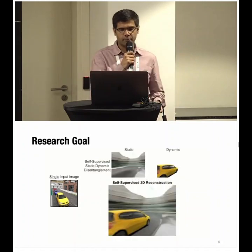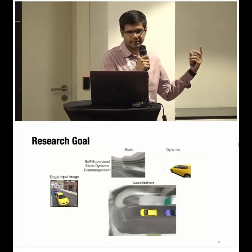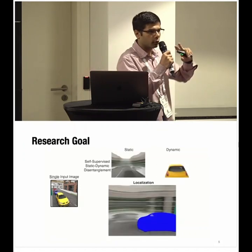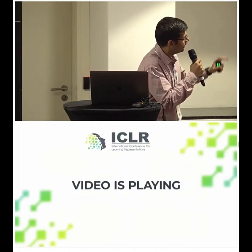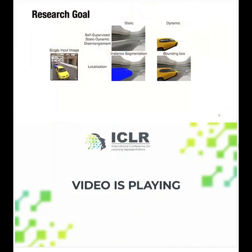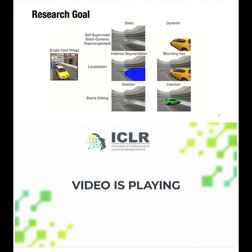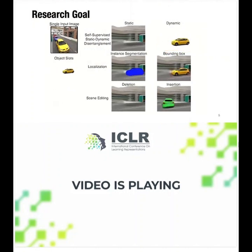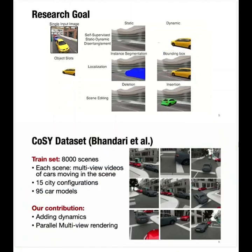Given a single input image, our method outputs 360-degree views of the scene. It can render the static part separately, the object part separately, and using the bird's-eye view, localize all objects, produce instance-level segmentations, and bounding boxes.